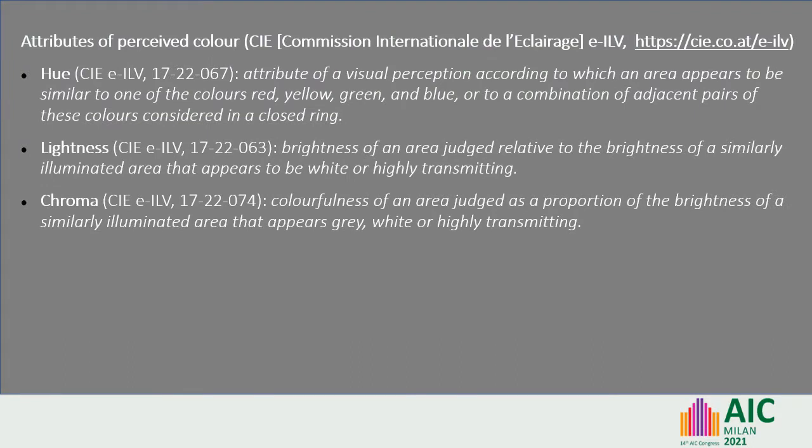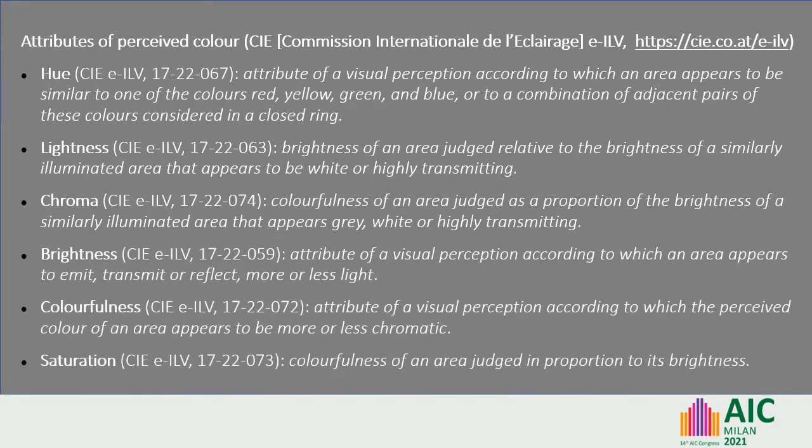In colour education, colour is usually described as having three attributes or dimensions, most commonly synonyms more or less of hue, lightness and chroma. Just three attributes suffice to describe colour as long as we only consider a single mode of colour appearance, such as colours of objects. But other attributes come into play when we must also consider colours of light.